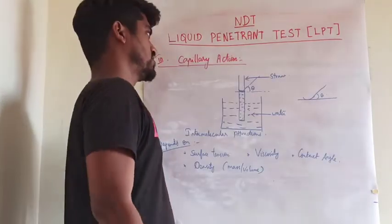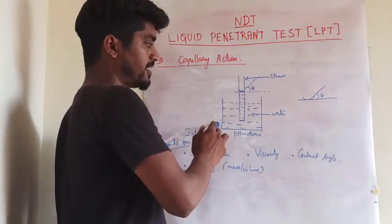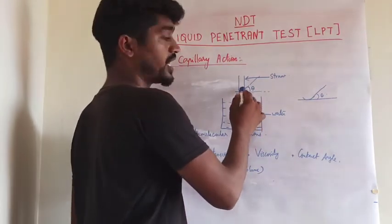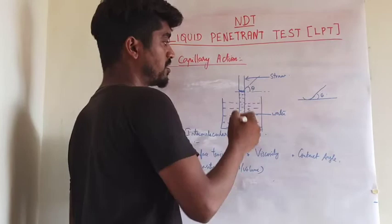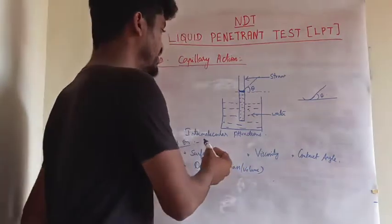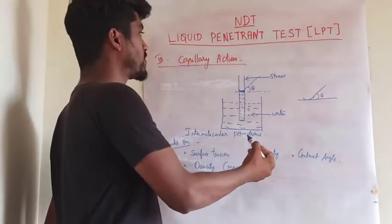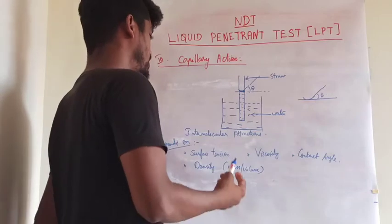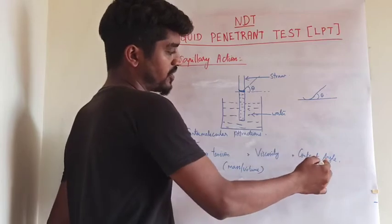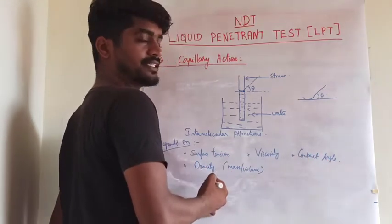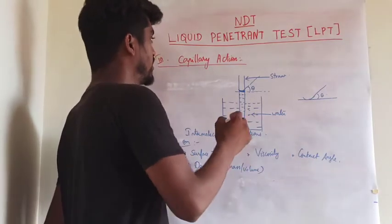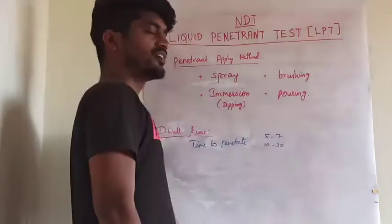The capillary action: when a beaker contains water and we put a straw inside it, the water level rises inside the straw, making a contact angle due to intermolecular attraction — this process is called capillary action. Capillary action depends on four factors: surface tension, viscosity, contact angle, and density.